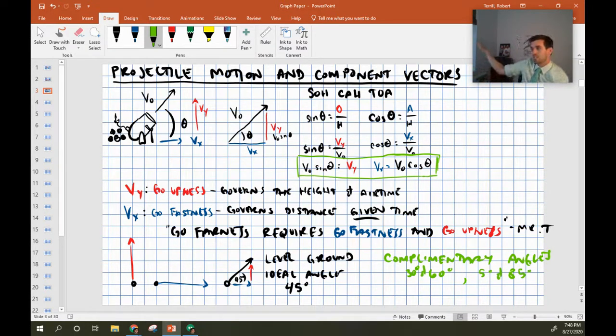Down if you launch down at a 5 degree angle, you'll definitely go very fast horizontally, but you'll have so little air time because you have such a small go upness that you'll hit the ground too fast to really go very far. So that's why complementary angles on level ground actually hit the same spot. The big difference is that the higher angle will always have more go upness, so even though they go equally far, the greater angle will go higher in the air and it will have more time of flight.